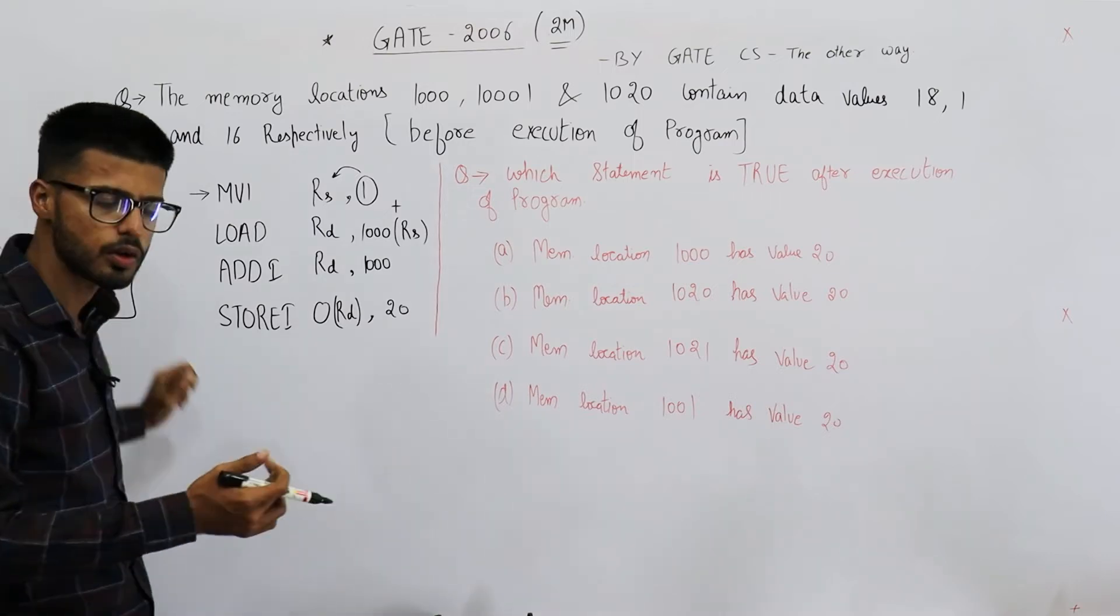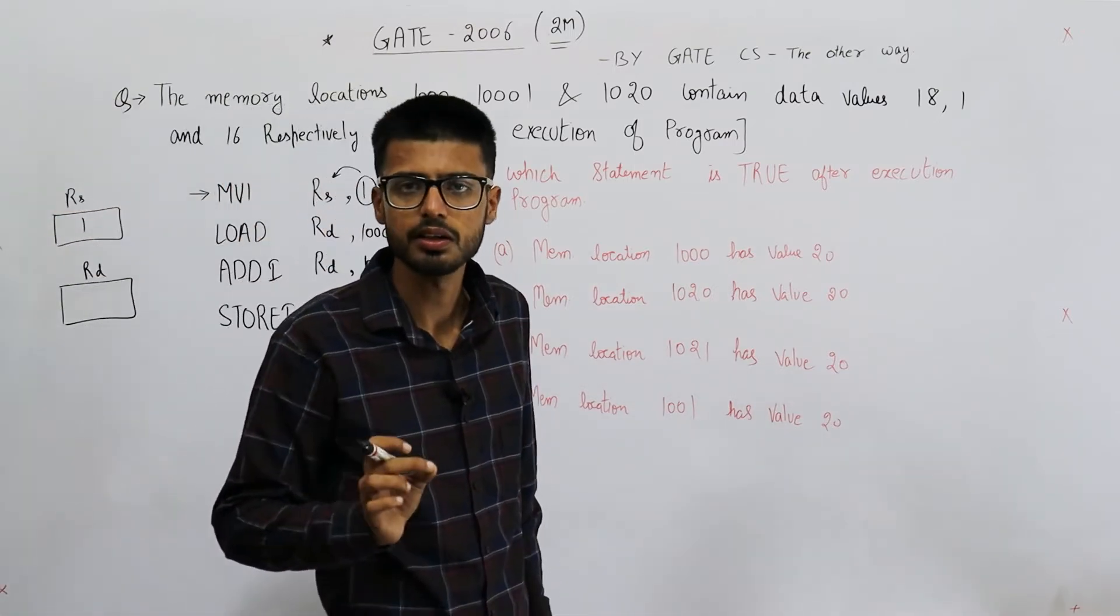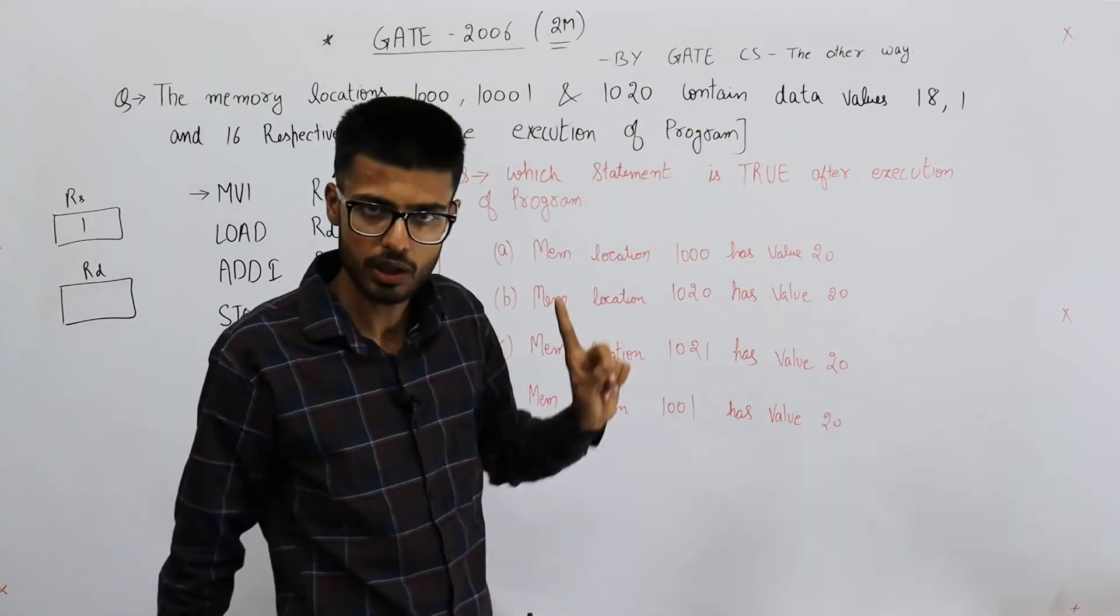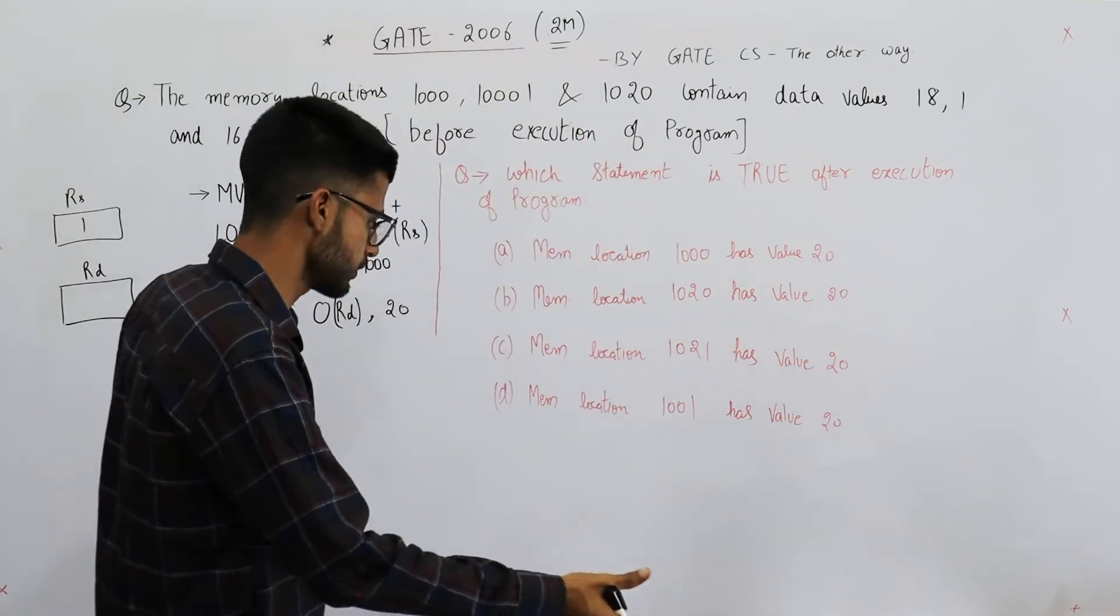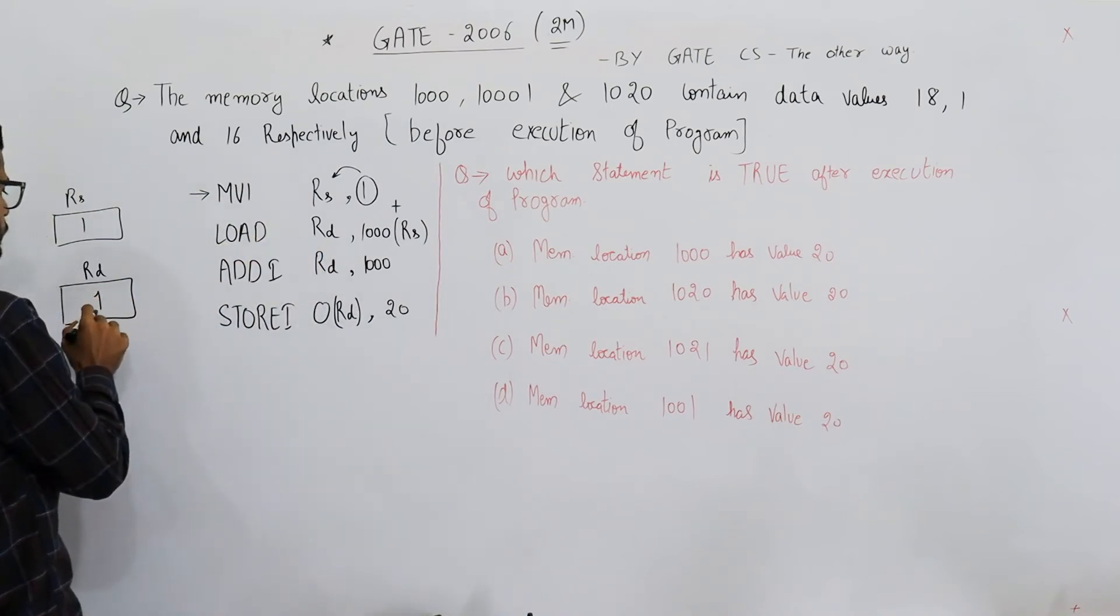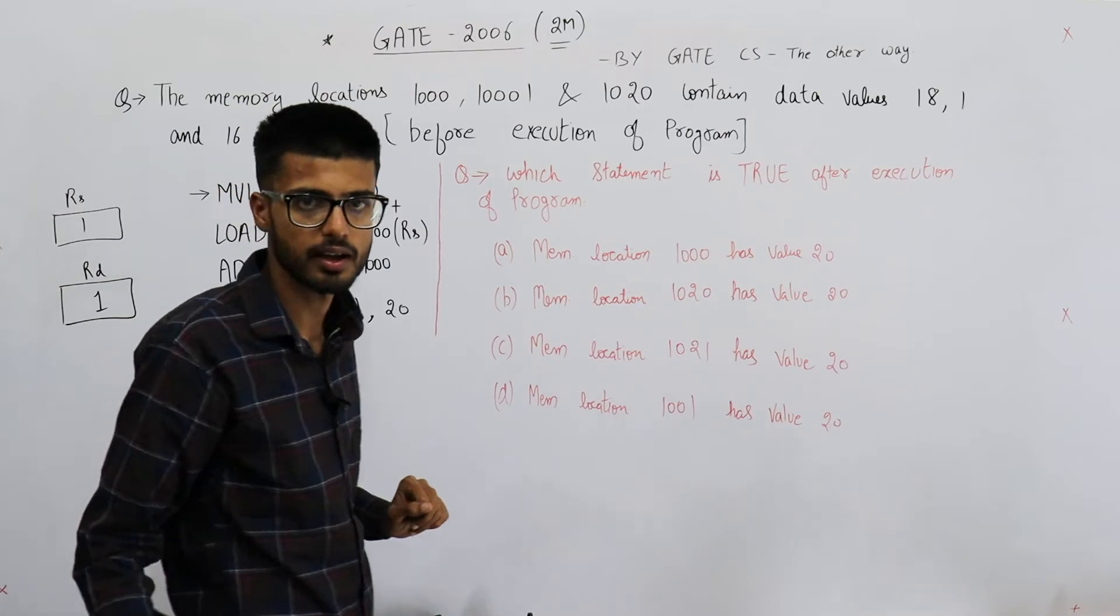Rs has 1, and memory location 1000 plus 1 means we need to load from memory location 1001. Now you can see 1001 contains 1, so data in that memory location which is fetched into this Rd is also 1. So both of these registers contain 1 as their data.